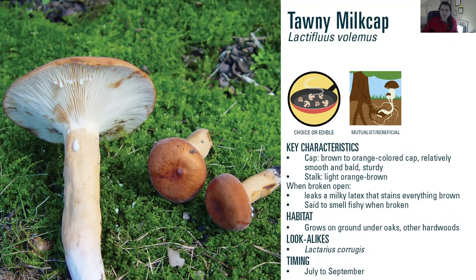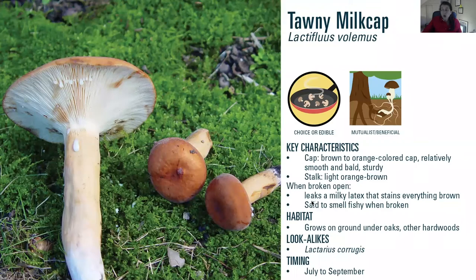Compared to the woolly milk cap, the tawny milk cap, Lactarius volemus, is actually edible. The cap is brown to orange, relatively smooth and bald, and the stalk is light orange to brown. This one will also leak that milky latex, so be careful. It's said to have a kind of fishy smell when broken. You'll find this one under oaks and other hardwoods, and be careful there is another lookalike — Lactarius corrugis — that you want to make sure you know about.